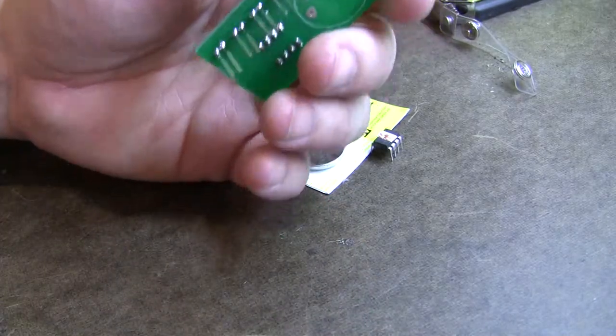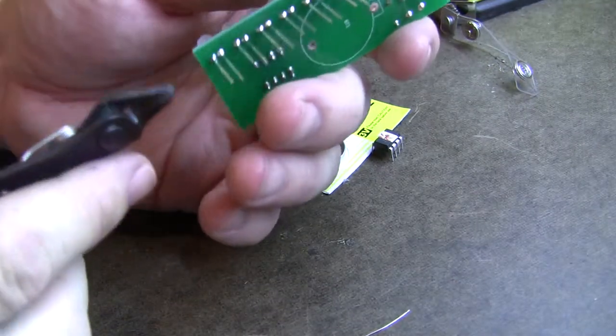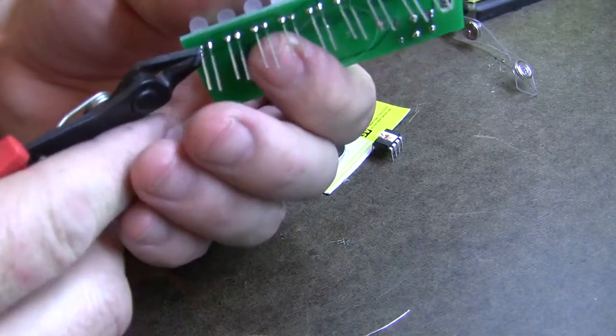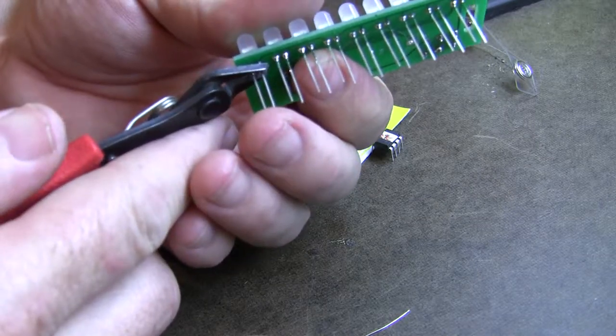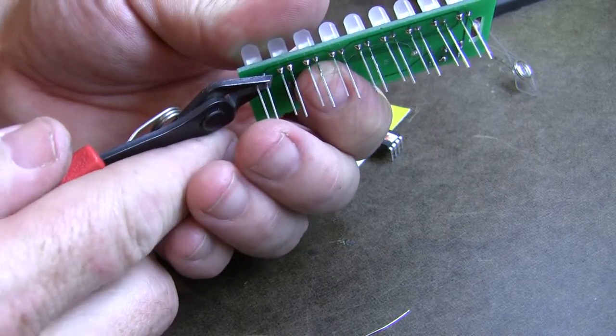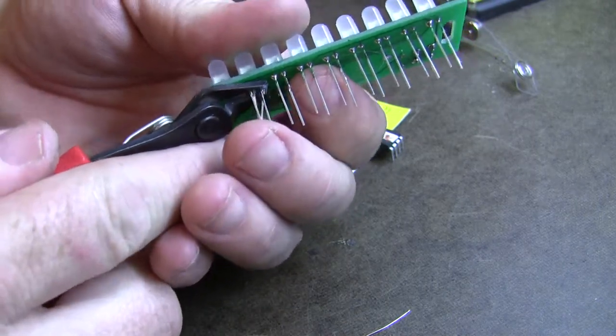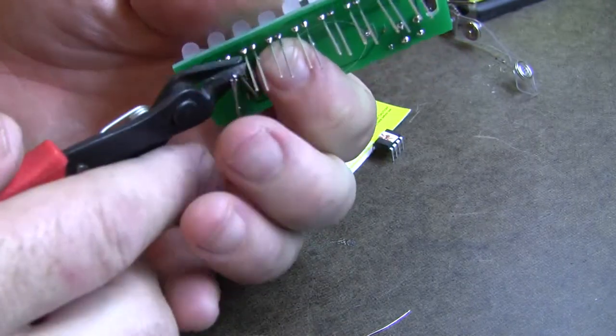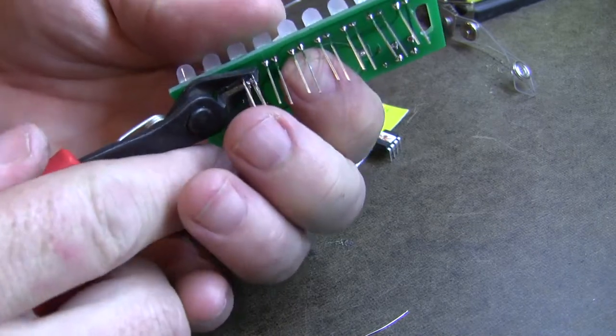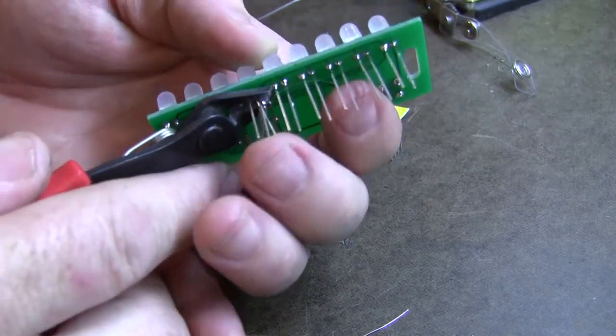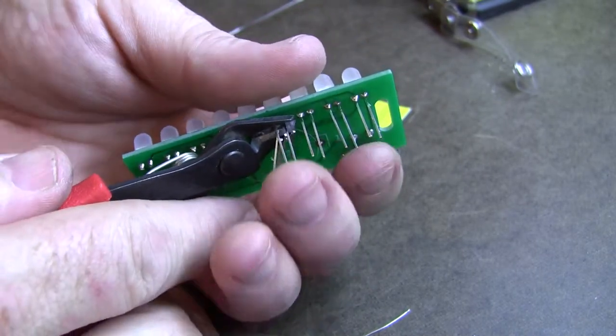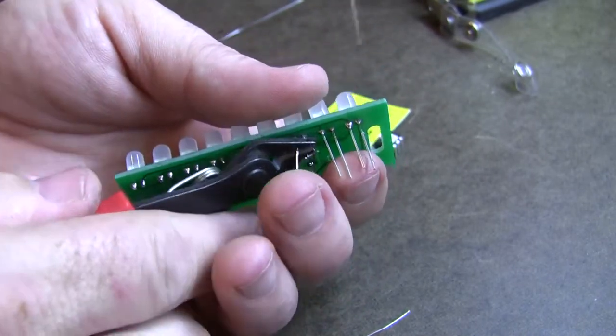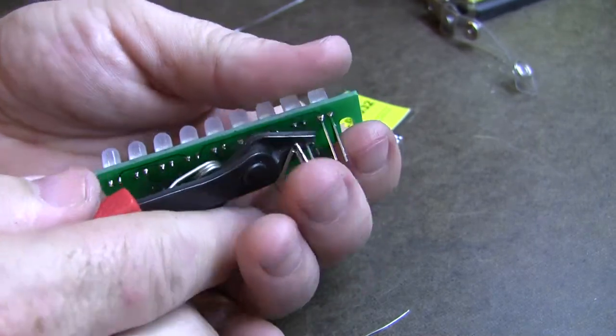When you clip these leads, the resistor leads are pretty skinny, but these leads are like steel. And when you clip these, they can go shooting away. So put your finger in front of them like this, because I've seen them go shooting across rooms. And you don't want to have them fly into somebody's eye. So I'm going to clip them down. Oops, that one went flying. Almost done.